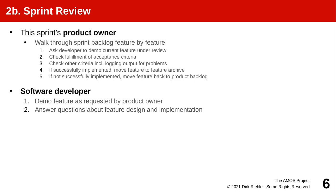And then a review decision is cast: either this is properly implemented — 100% implemented — and then the feature counts as implemented and goes into the feature archive; or if it has not been 100% implemented, it goes back into the product backlog. So only fully implemented features are considered finished and moved into the feature archive. Those which have not will go back into the product backlog, where they will join the new features and be scheduled in the upcoming sprint planning meeting as well.